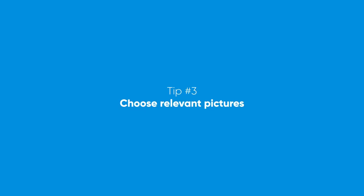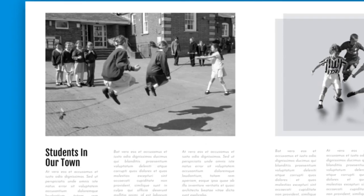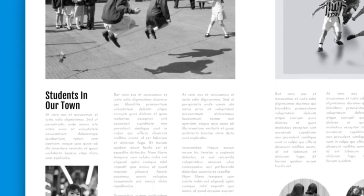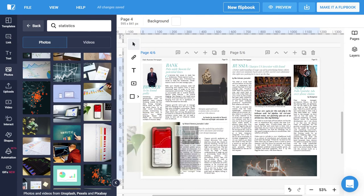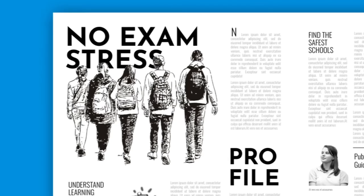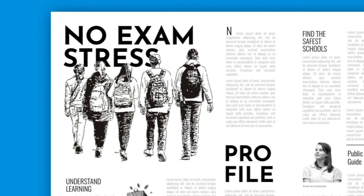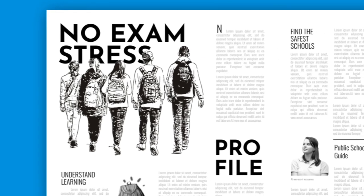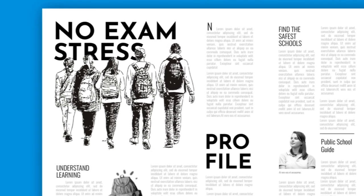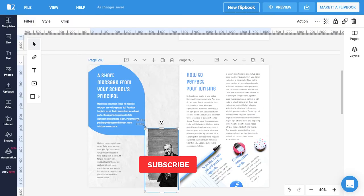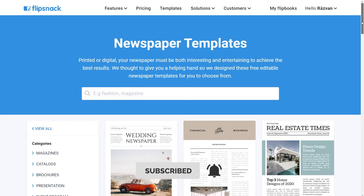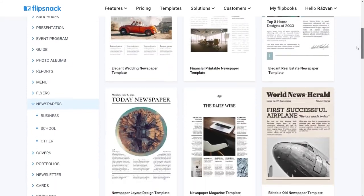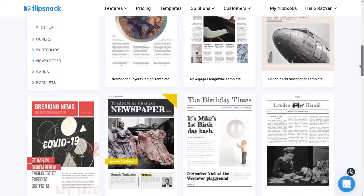Tip number three: choose relevant pictures. Images have the power to balance the text and help you convey a clear message. For instance, a statistical graphic could come in handy for a financial article. On the other hand, an emotional shot works with an inspirational piece for your high school newspaper. Don't be afraid to maximize your photos — the bigger, the better. With our various newspaper templates, you are just one click away from making your own newspaper.